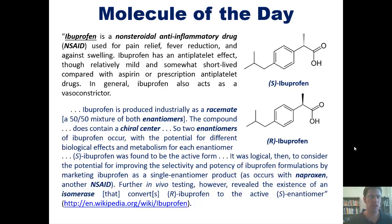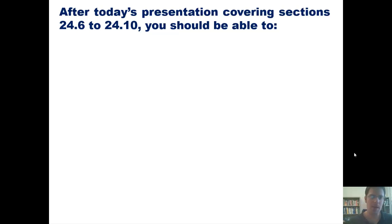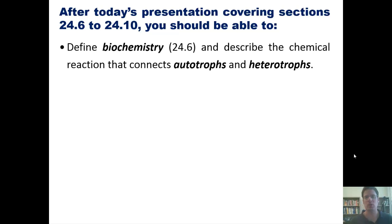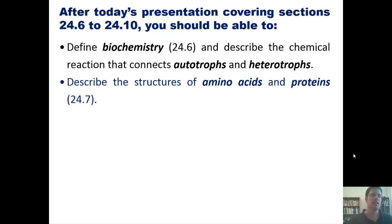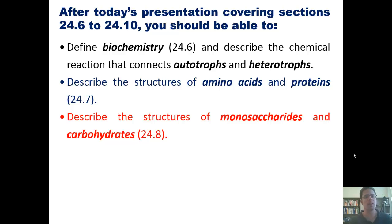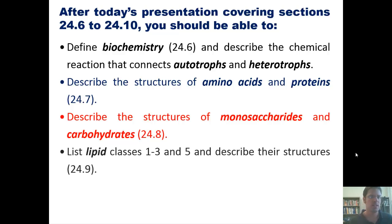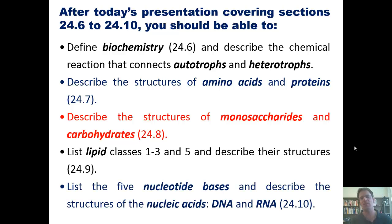After the next few lectures covering the rest of Chapter 24, you should be able to define biochemistry and describe the chemical reaction that connects autotrophs to heterotrophs, describe the structures of amino acids and proteins, describe the structures of monosaccharides and carbohydrates, list lipid classes one through three and five and describe their structures, and list the five nucleotide bases and describe the structures of the nucleic acids DNA and RNA. That's the lineup, so let's get started.